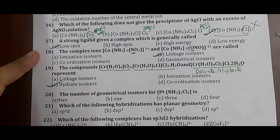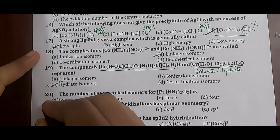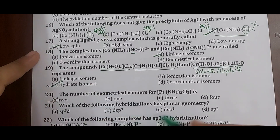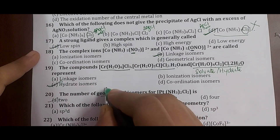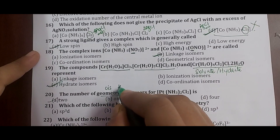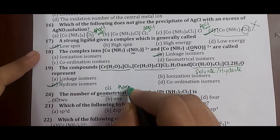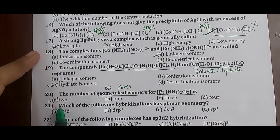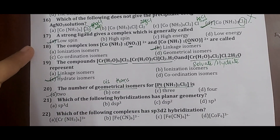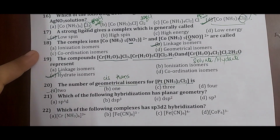Question 20: the number of geometrical isomers for [Pt(NH3)2Cl2] is? This complex exhibits cis and trans isomerism — two types of geometrical isomers are possible. Correct answer: option A, 2.